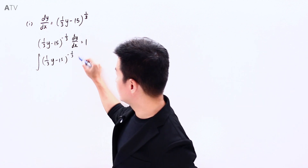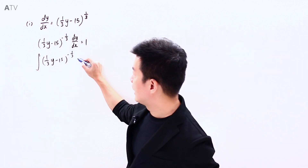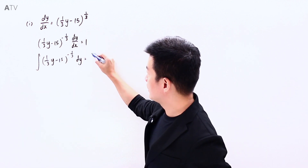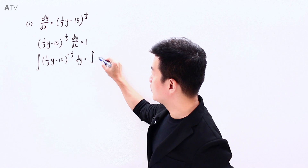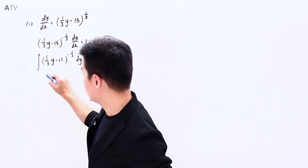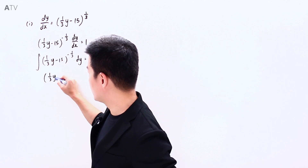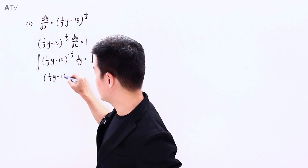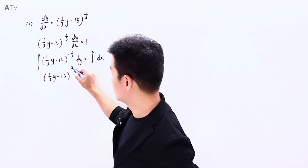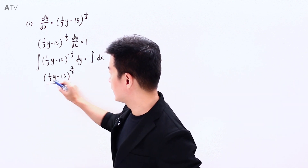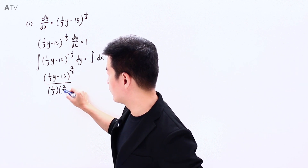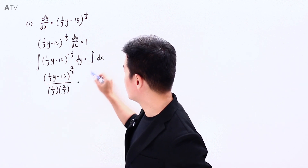Integrating with respect to x, I can simplify that. On the right hand side we are integrating 1 with respect to x. For the left side integral, I get (1/3y − 15)^(−1/3 + 1), which is to the power of 2/3, divided by the coefficient of y which is 1/3. This 2/3 over 1/3 is going to be part of the result.